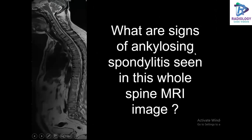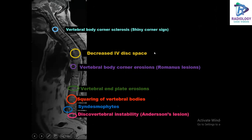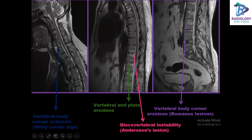This whole spine MRI image shows findings of the shiny corner sign (vertebral body corner sclerosis), decreased intervertebral disc space, vertebral body corner erosions (Romanus lesions), vertebral end plate erosions, squaring of the vertebral bodies, syndesmophytes, and discovertebral instability (Anderson's lesions). A magnified view confirms the same findings: shiny corner sign, vertebral end plate erosions, discovertebral instability, and Romanus lesions.